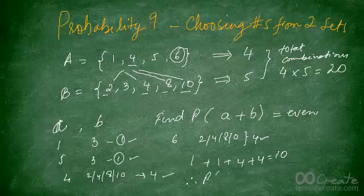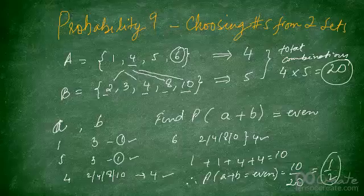Therefore, the probability that A plus B is even is 10 out of 20, which equals 1 over 2. Pause the video now and think about this before moving on to the next question, which uses the same data but a different operation.